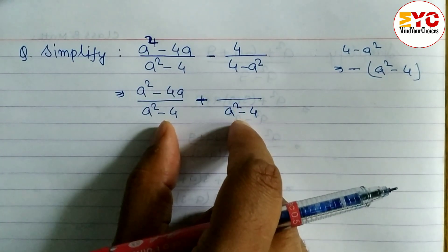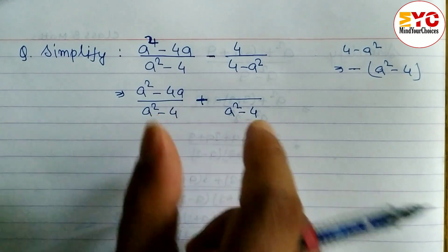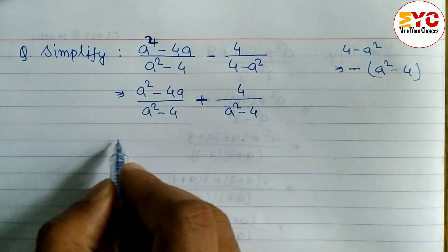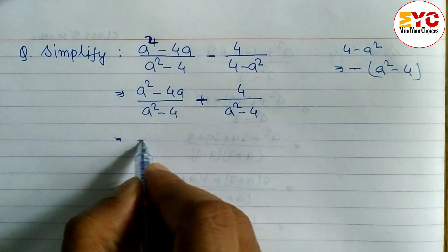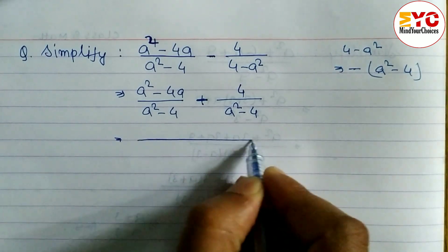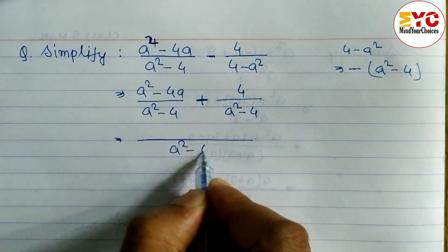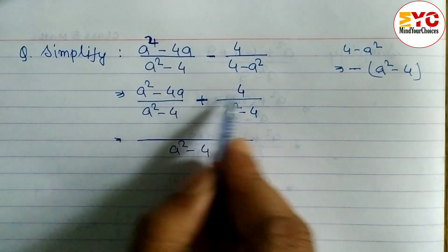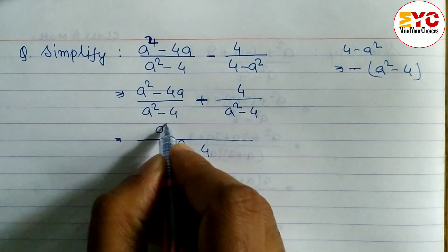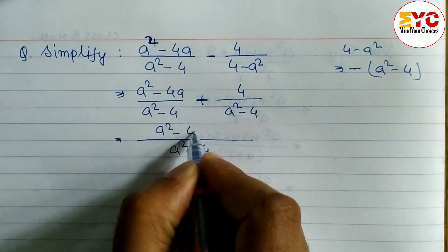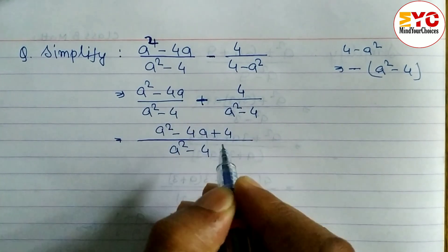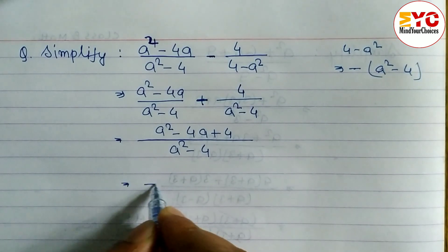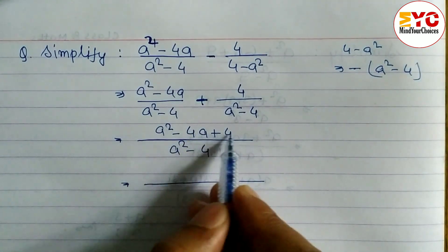Now you can see both denominators are the same, so it's easy to take LCM. The LCM is a squared minus 4. When denominators are same, we simply write the combined numerator: a squared minus 4a plus 4.